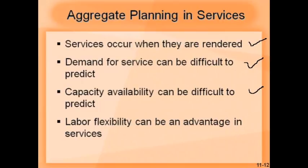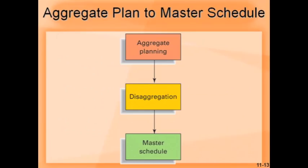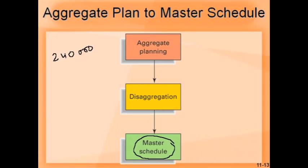Once aggregate planning is done and before a master production schedule can be developed, there is an intermediate stage called disaggregation. To move from aggregate planning to master scheduling, we need to disaggregate. In aggregate planning we have an overall plan — say 240,000 vehicles in one year — and at disaggregation that gets broken down: how many F-150s, F-250s, F-350 trucks, how many Focus or other vehicles, how many SUVs. All that breakup is done at this stage so that the master production schedule can be developed in more detail.